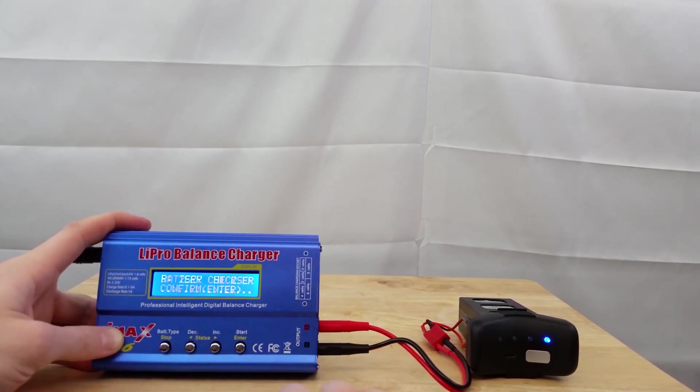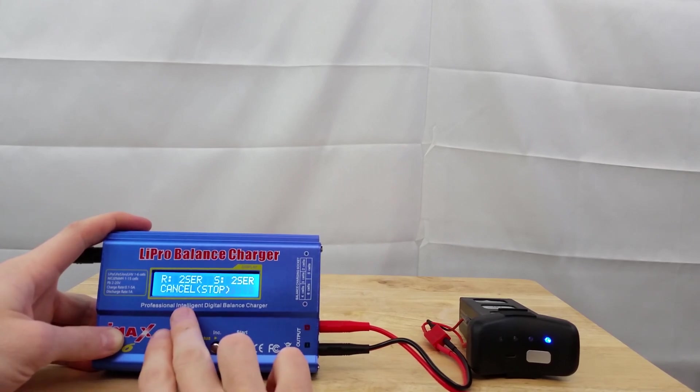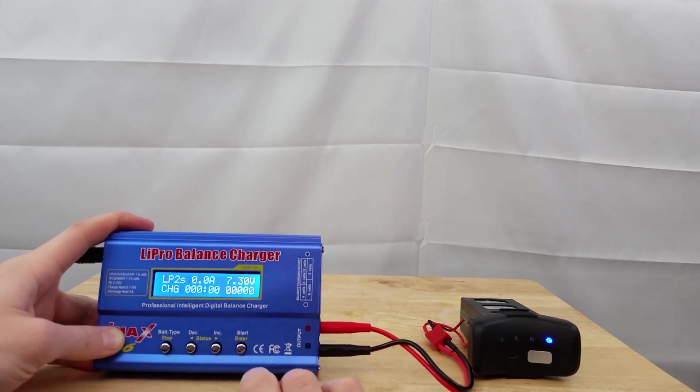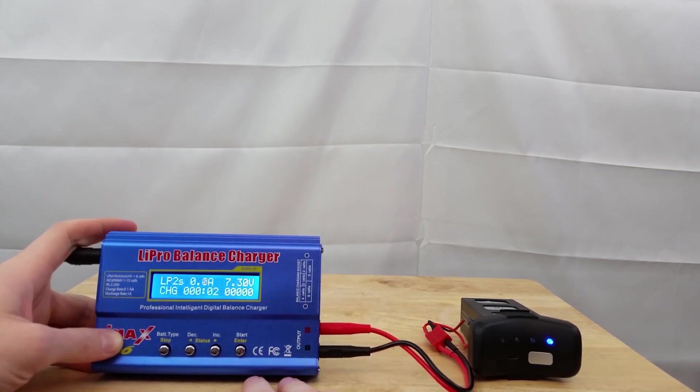Now it's going to check the battery. It tells you have two cells in series is what this is reading. And what we have set is two in series. Hit enter to confirm. And it'll start charging here.